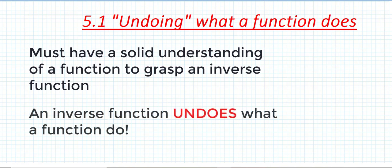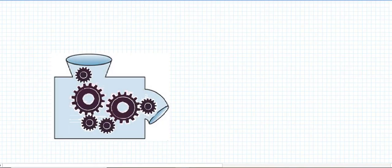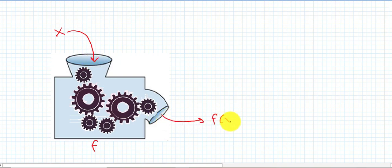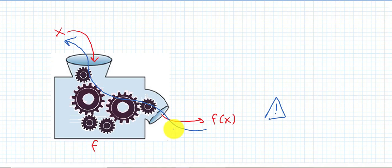In simple words, an inverse function, if it exists, undoes what a function does. Going back to an image from unit 3, section 2.2: if we think of a function f as a machine that transforms an x into an f of x, then an inverse function would traverse the machine in the reverse way — it goes from f of x back to x. Be careful, though: it is not always possible to go back through the machine in that direction. We will see when we can do that in the second lecture.